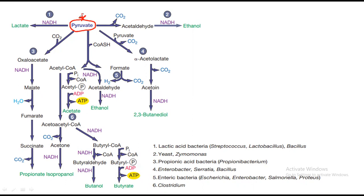If there is glucose in the media, or other polysaccharides and monosaccharides, the polysaccharides will first be converted into glucose through different chemical reactions. I have covered how complex sugars are metabolized in a separate video. So if there are complex sugars in the media, they will first be converted into glucose, and after that the glucose will be converted into pyruvate.